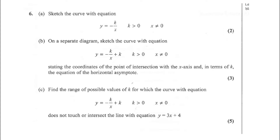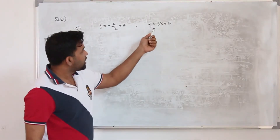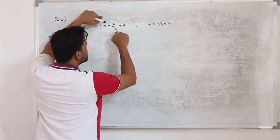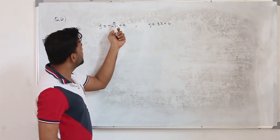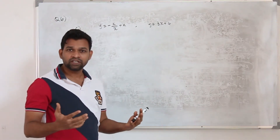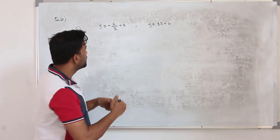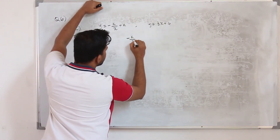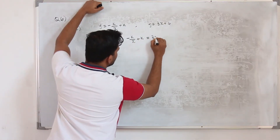Part C: find the range of possible values of k for which the equation y equals minus k upon x plus k does not touch or intersect the line y equals 3x plus 4. The question carries 5 marks. Whenever we talk about a point of intersection of a straight line and a curve, we need to equate them first: minus k upon x plus k equals 3x plus 4.